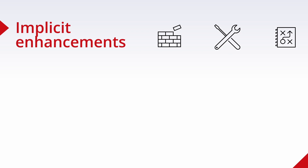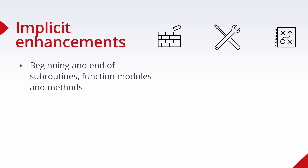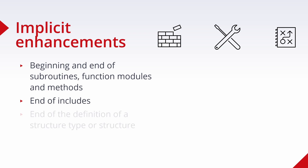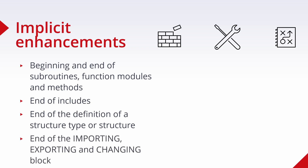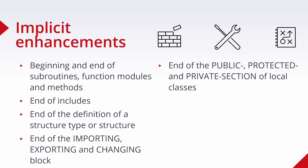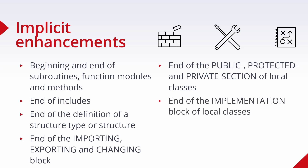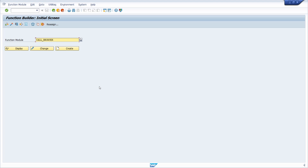Implicit enhancement points are available at the following locations: beginning and end of subroutines, function modules, and methods; end of includes; end of define or definition of a structure type or structure; end of the importing, exporting, and changing block of the declaration of local classes and in the interface definitions of function modules and methods of global classes; end of the public, protected, and private section of local classes; end of the implementation block of local classes; and end of pre- and post-methods of global classes.